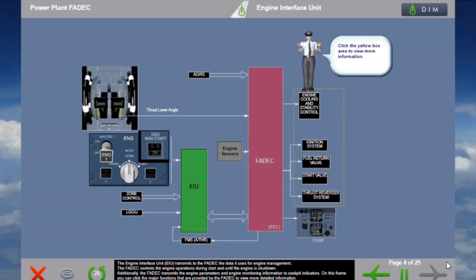The Engine Interface Unit, EIU, transmits to the FADEC the data it uses for engine management. The FADEC controls engine operations during start and until the engine is shut down. Additionally, the FADEC transmits engine parameters and engine monitoring information to cockpit indicators. On this frame, you can click the major functions provided by the FADEC to view more detailed information.